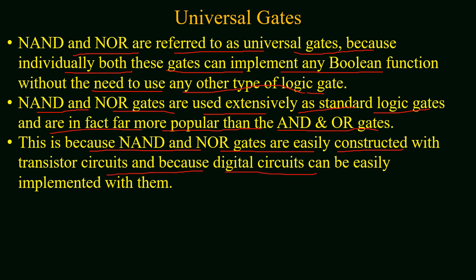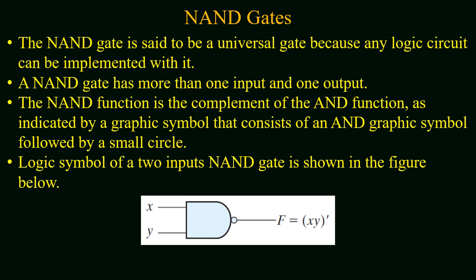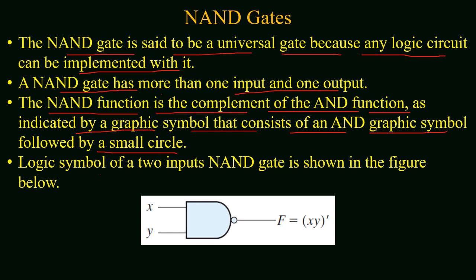NAND and NOR gates are popular because they can be easily constructed with transistor circuits and digital circuits can easily be implemented with them. The NAND gate is said to be a universal gate because any logic circuit can be implemented with it. A NAND gate has more than one input but one output. The NAND function is the complement of the AND function, as indicated by a graphic symbol consisting of an AND symbol followed by a small circle or bubble.